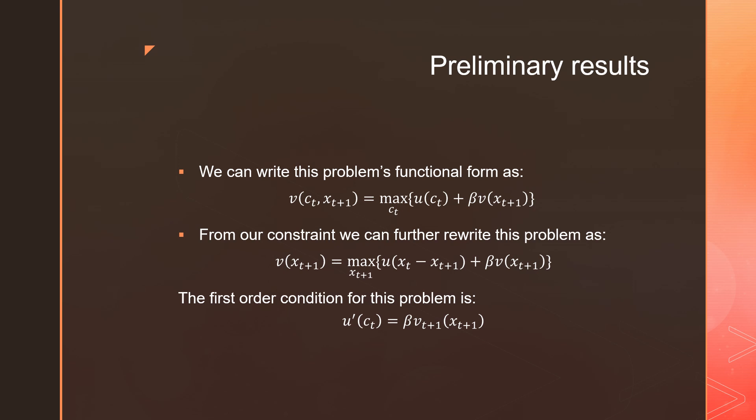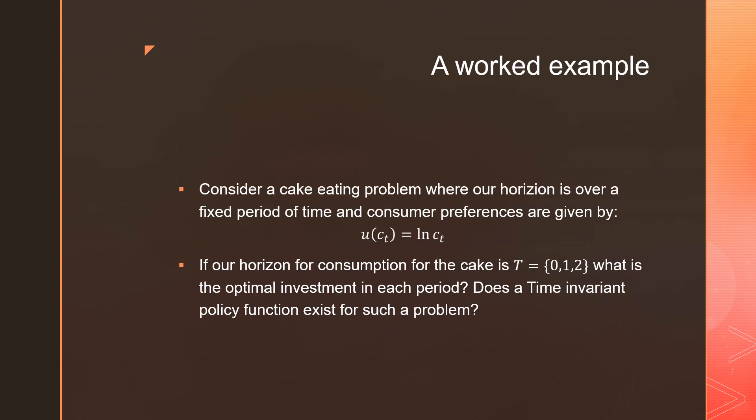Now let's go through a worked example. Consider a cake eating problem where our horizon is given over a fixed period of time and our consumer's preferences are given by the utility from consumption in time T equals ln(C_T).